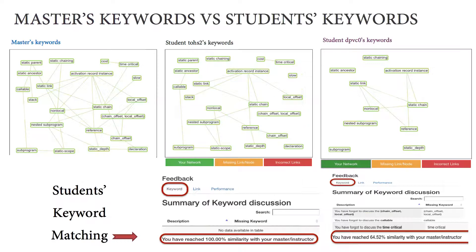GICS can present students' writing in a graphical network and also provide the verbal description of similarity percentage of keyword matching. When a keyword is clicked,